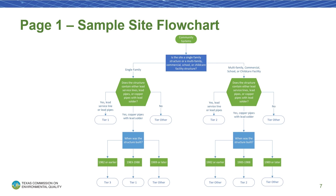Follow the questions on this flowchart to find the tier that your site falls into. For example, if you have a site that is a single family residence that has copper pipes with lead solder, built in 1964, it would be a tier 3 site. If you're having trouble reading the text, you can expand the video into full screen mode by clicking the full screen icon at the bottom-most right of this video.